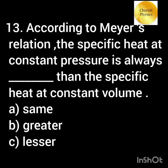According to Meyer's relation, the specific heat at constant pressure is always dash than the specific heat at constant volume. Option A: same. Option B: greater. Option C: lesser.